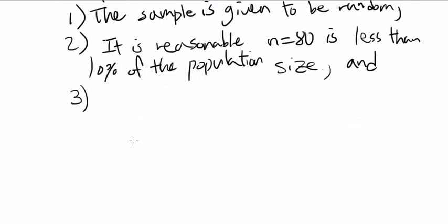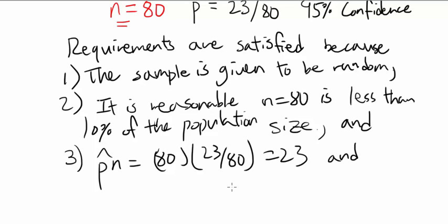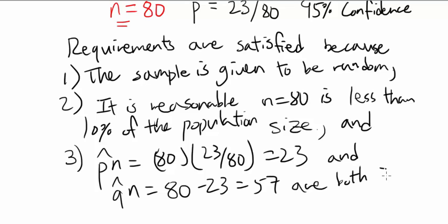And the last one, last but not the least. We know that p-hat times n, which is 80 times 23 over 80, is 23. And q-hat times n, which is 80 minus 23, is 57, are both greater than or equal to 5. Since all of our requirements are satisfied...